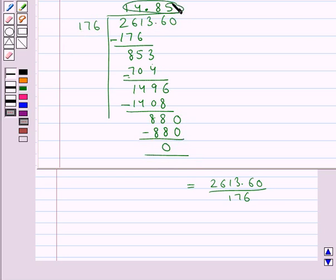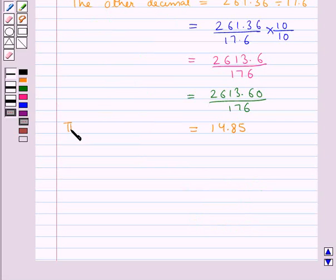So this is the quotient, or we can say 2613.60 divided by 176 is equal to 14.85. So we now get the other decimal is equal to 14.85.